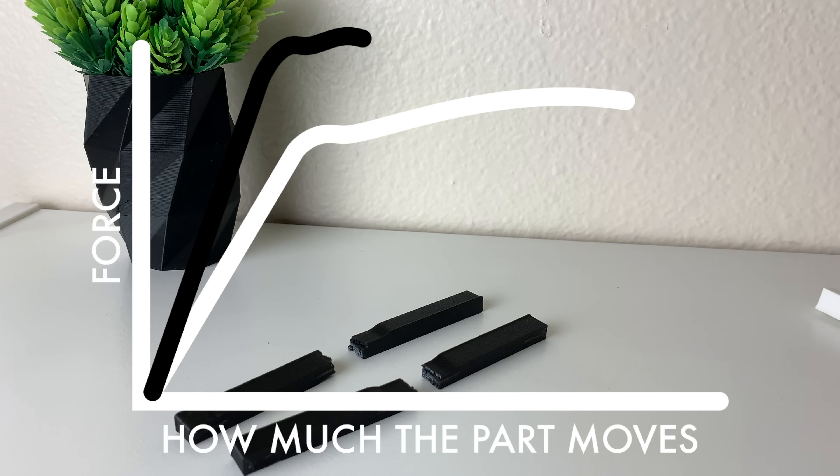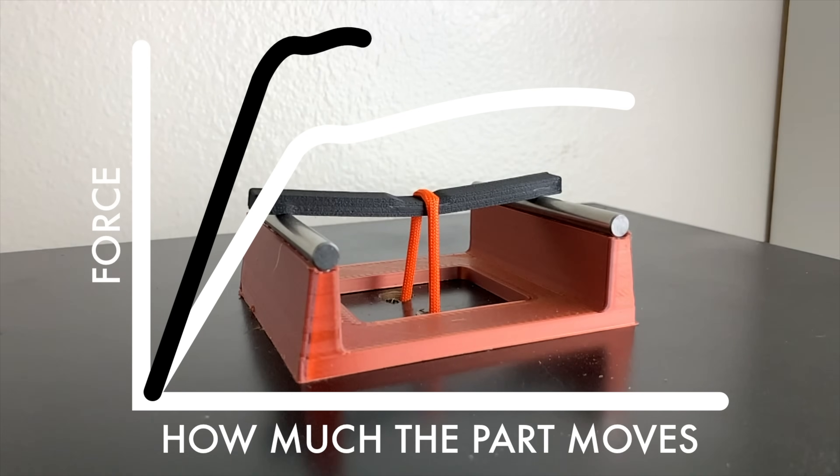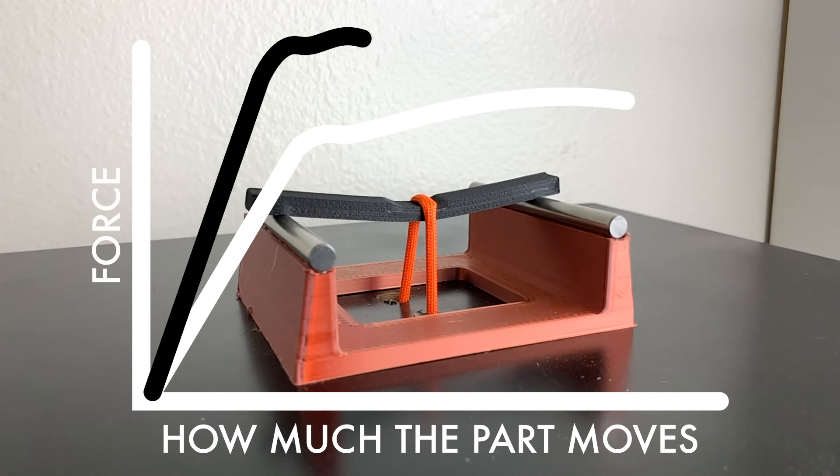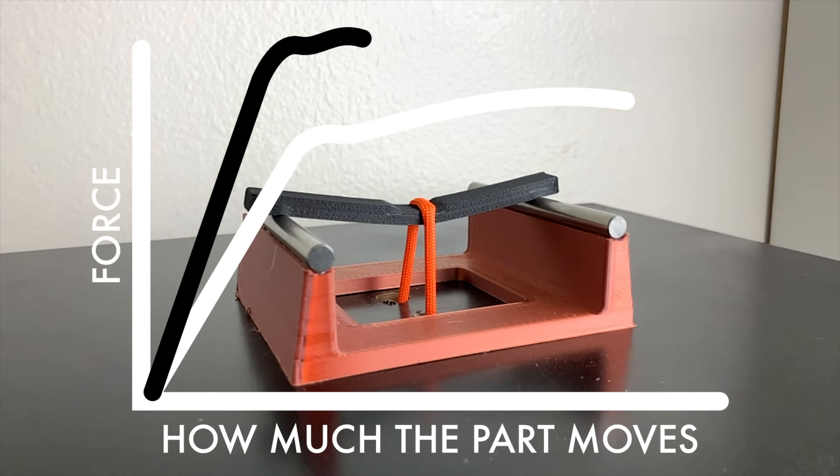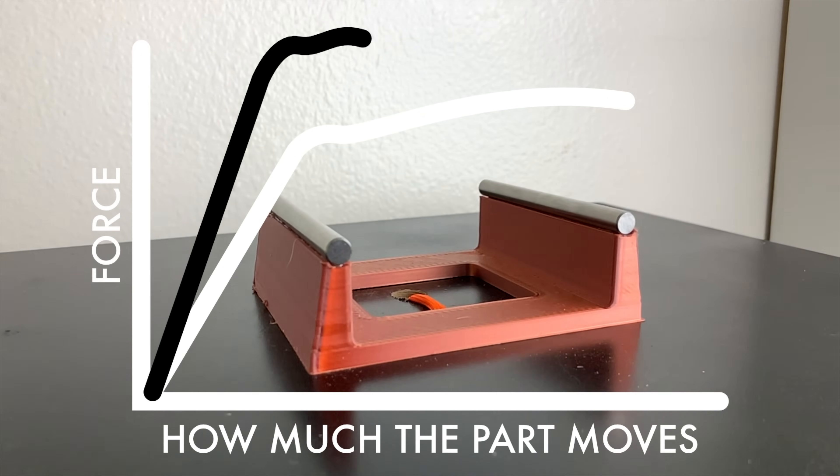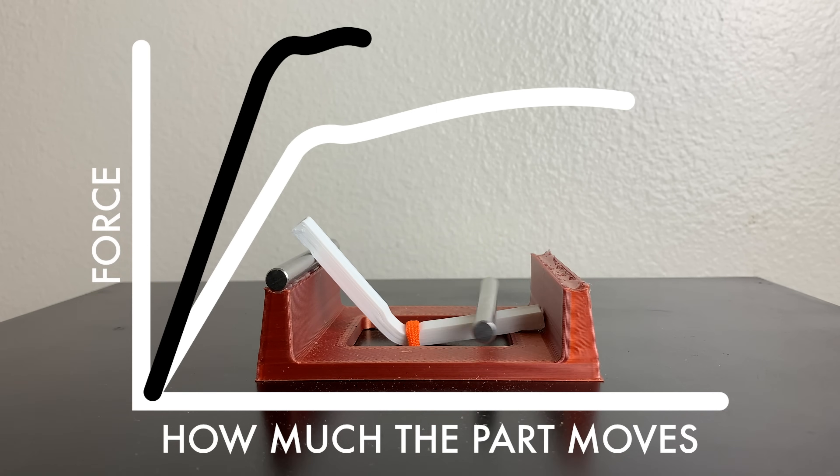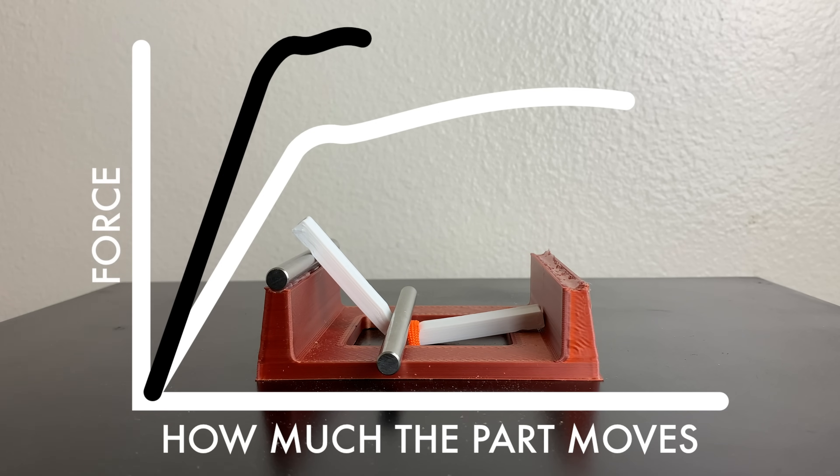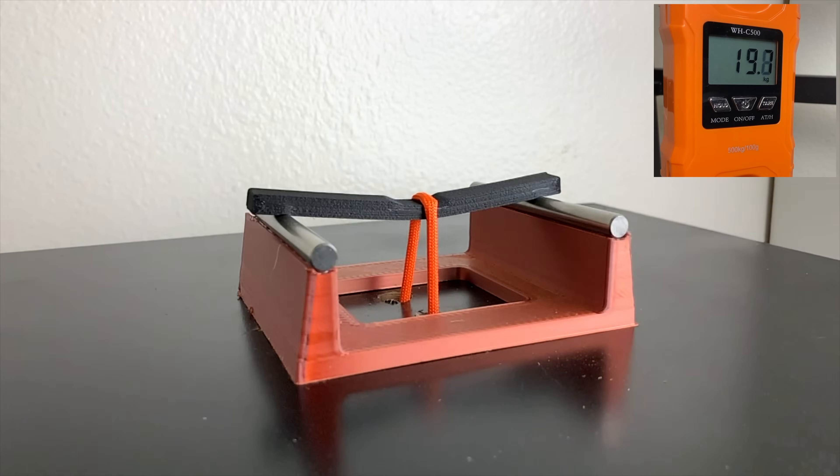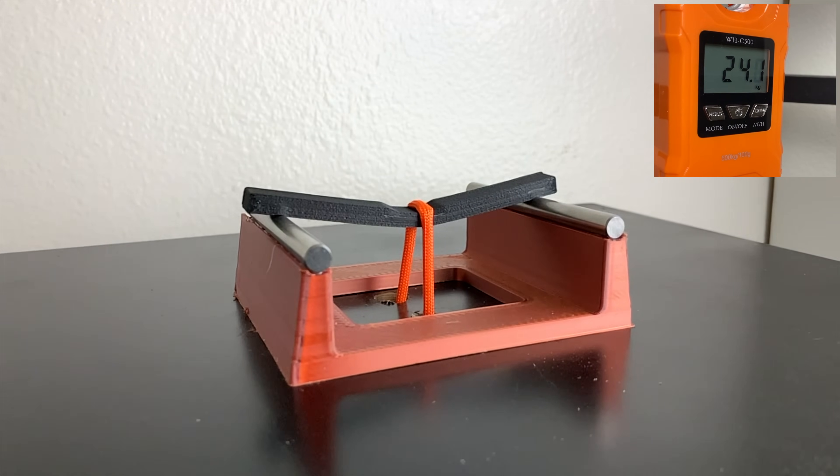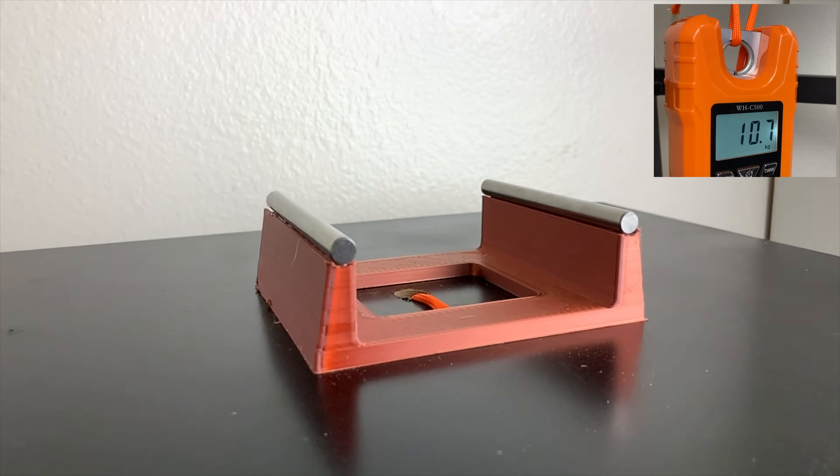And here are the final results. The black line represents the carbon fiber filament and the white line represents the regular PLA filament material. It may still look a little confusing to you but all you have to know is the taller the line on the graph, the stronger the material is. The wider it is, the more ductile or more bendable the material is. So in this test we actually found that the carbon fiber filament is actually stronger than the regular 3D printer filament.